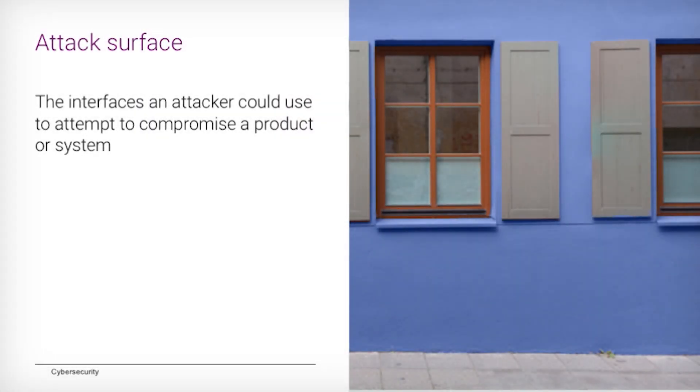Let's talk about the attack surface. If you think about a system as having a number of different interfaces or ways that somebody could try to interact with it, the attack surface is all of those potential ways that somebody could attempt to talk to or interface with that system. Because if they can talk to it or interface with it, they can attack it. The key question is: what are all the different ways that somebody could try to get into our system?